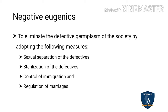Another measure is control of immigration. During the COVID period, many Chennai residents dispersed to other parts of Tamil Nadu — that is migration — while immigration refers to people coming from other countries. A person with a genetic defect has to be sterilized, isolated, and prevented from spreading the defect. That is the negative eugenics approach.